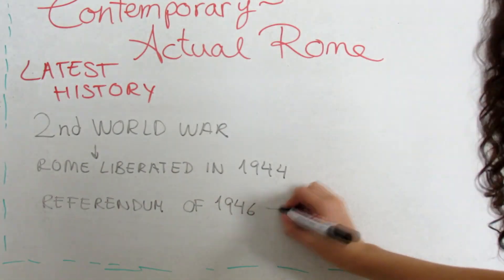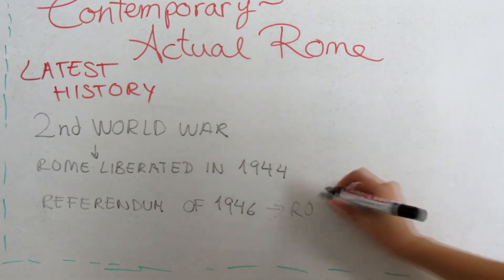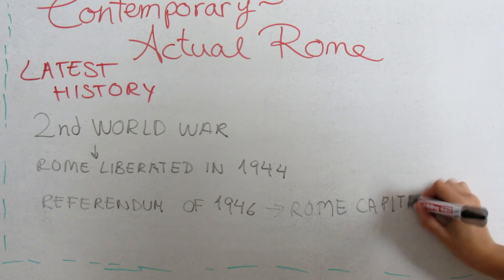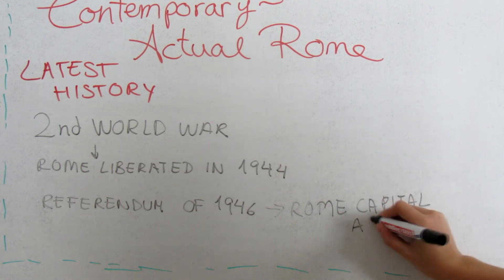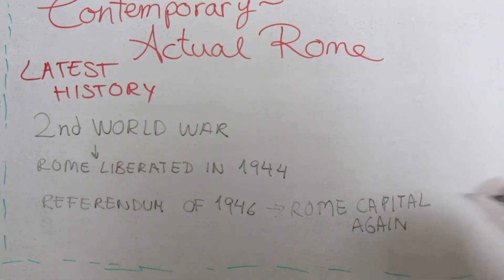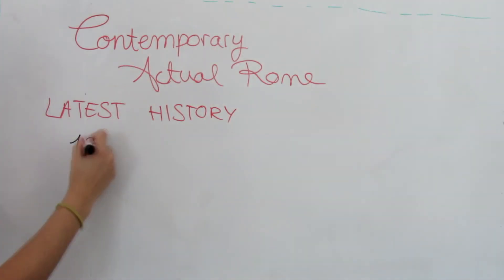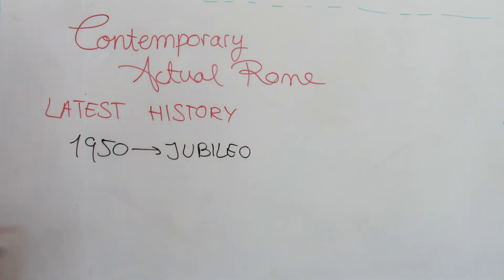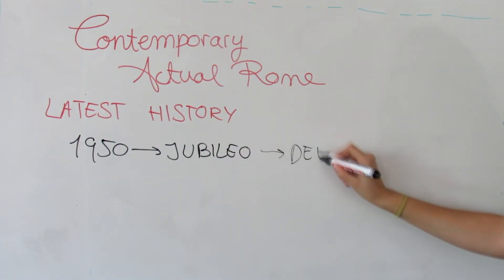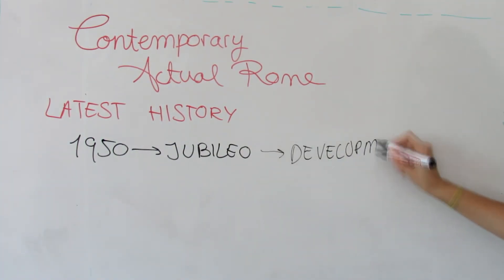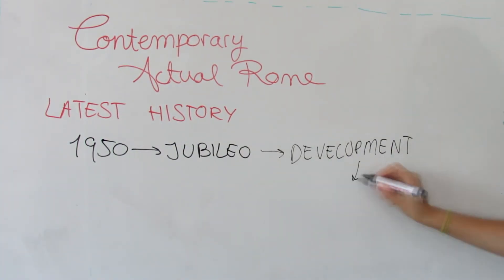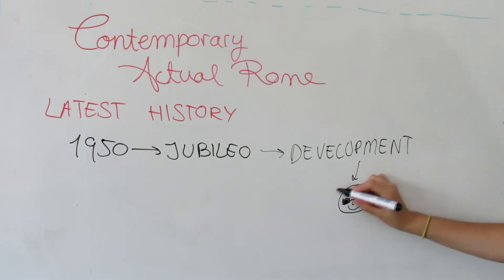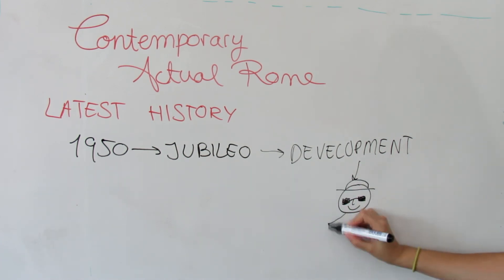After the war, following the referendum of 1946, Rome became again the capital of the Italian Republic. In the 1950s and 1960s, the city developed urban and demographically, and since the Jubilee of 1950, it became one of the most desired destinations.